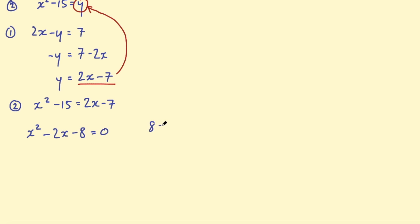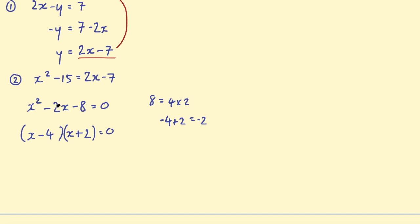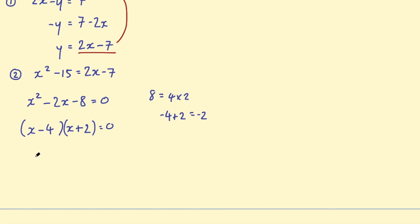Well, 8 equals 4 times 2, and then minus 4 plus 2 equals minus 2. So I can use the factors of 4 and 2: x and x makes x squared, then I need a negative 4 and a plus 2, and if we expand those out we'll get x squared minus 2x minus 8. So now we know that x equals 4 or x equals minus 2.